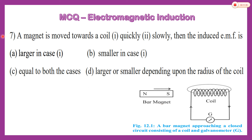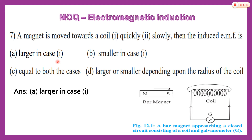So when the magnet moves towards the coil quickly or slowly, the induced EMF is larger in the case where it moves quickly. The options of 'smaller,' 'equal in both cases,' and 'depending on the radius of the coil' are all wrong. So the first option — larger in the fast case — is the correct answer.